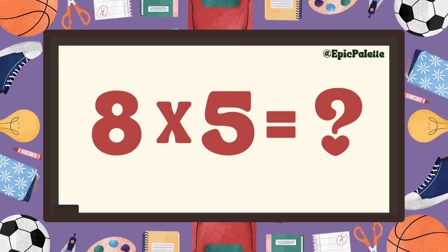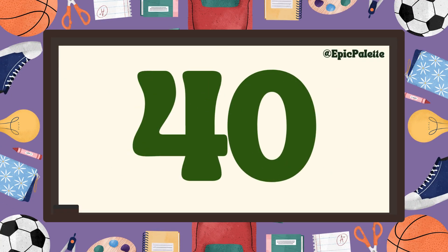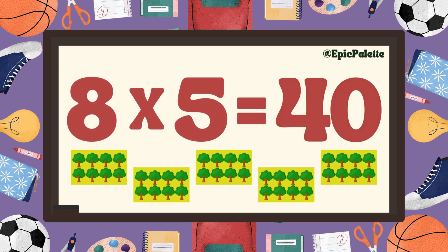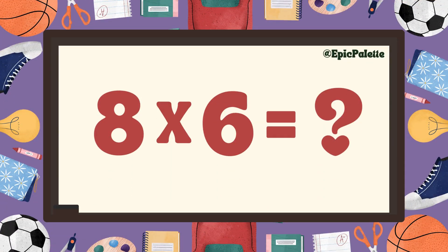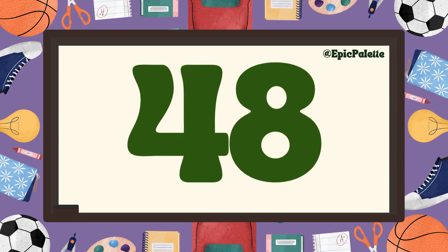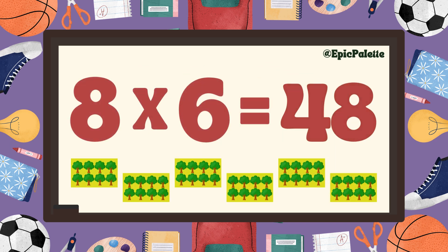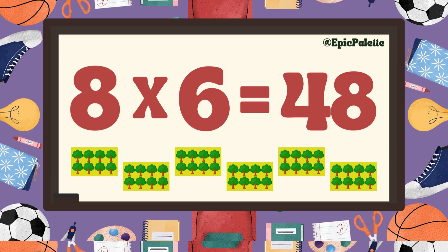Eight times five equals... Forty. That's right. Eight times five equals forty. Great job. Eight times six equals... Forty-eight. That's right. Eight times six equals forty-eight. You got it.